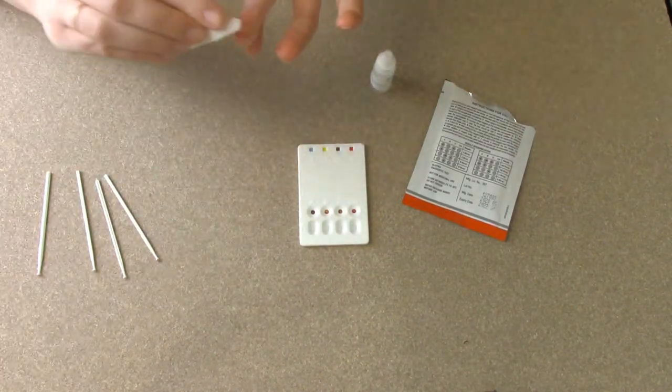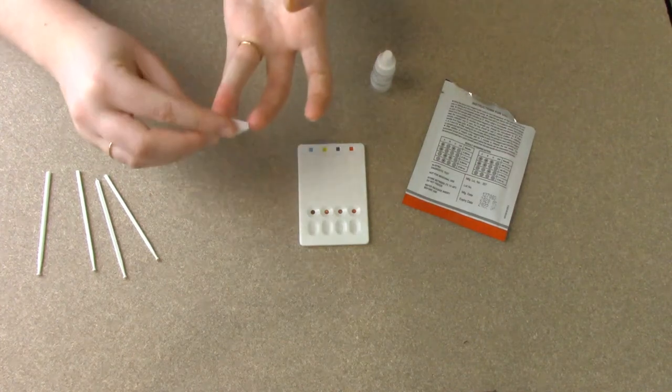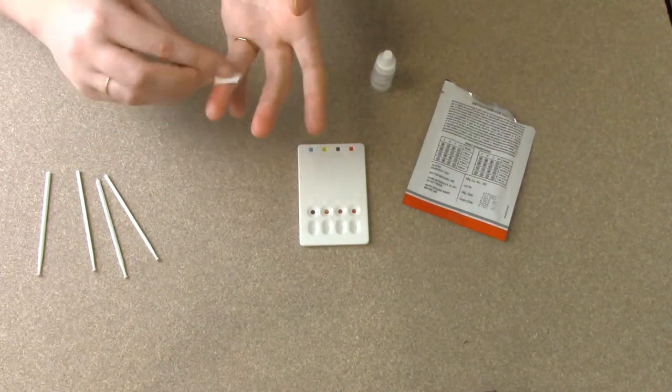You can take your alcohol prep pad and just kind of clean off your finger. It will begin to clot and the bleeding will stop.